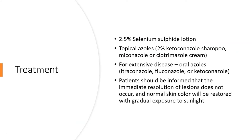For treatment of Pityriasis Versicolor, people commonly use 2.5% selenium sulfide lotion, which is an over-the-counter medication — applied to the whole body until the lesions disappear, three times a week. The most popular are topical antifungals such as 2% ketoconazole shampoo, miconazole cream, or clotrimazole cream. If the disease is severe, you may have to use systemic antifungals orally — that is itraconazole, fluconazole, or ketoconazole.